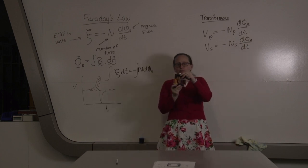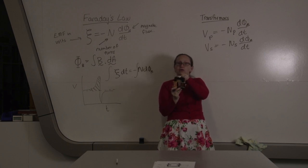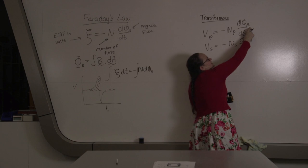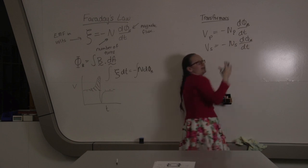With this transformer, the primary and the secondary coil have the same core. Because they have the same core, they have the same changing magnetic flux going through both of them. So this dφ_b/dt is a common term.